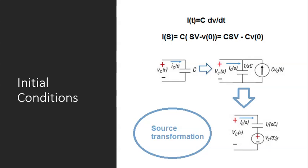The voltage source has the value of Vc₀⁻/s. Where does Vc₀⁻/s come from? Just a simple source transformation — we multiply by the impedance to get the value of the new source. So C cancels C, and you get Vc₀/s. Both models — the parallel current source model and the series voltage source model — are correct representations of a capacitor with initial condition in Laplace domain.